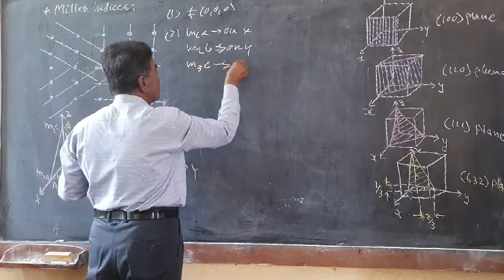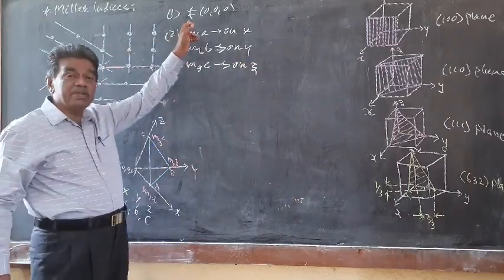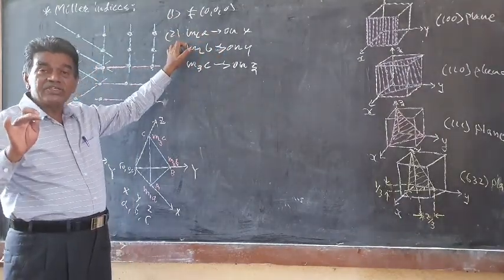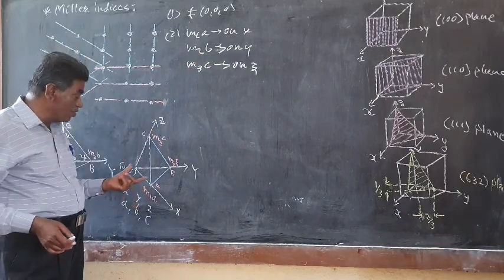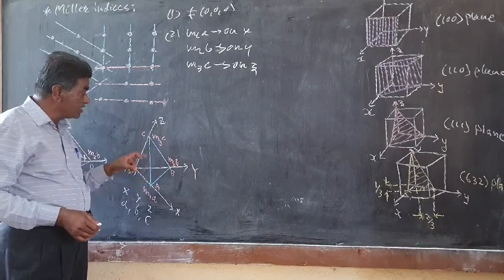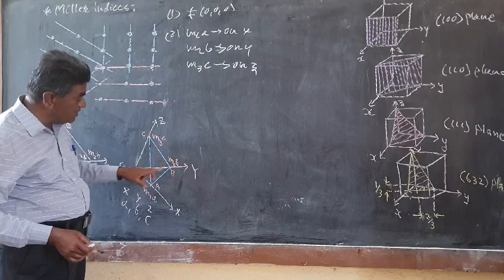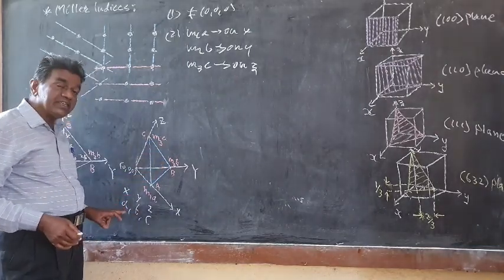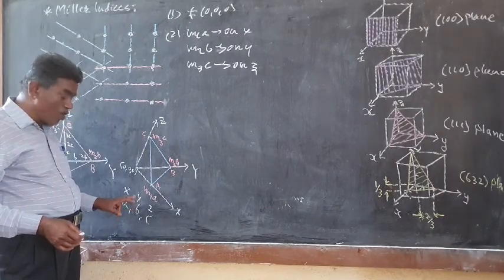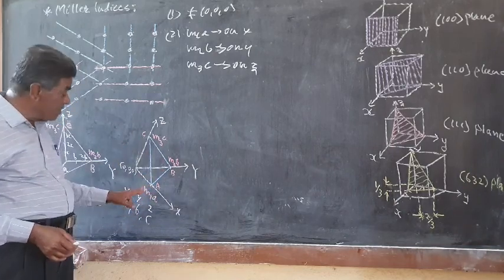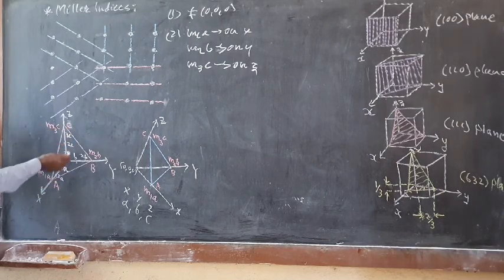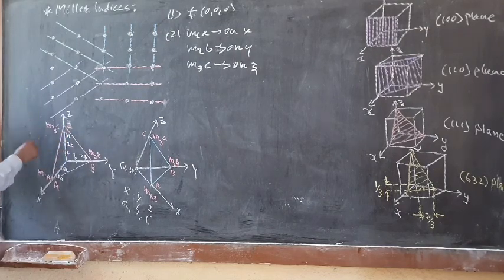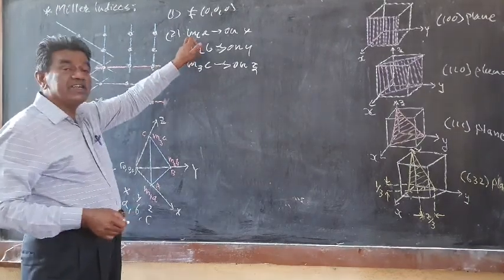So m₃c is the coordinate made by the plane on the z-axis. The intercepts are m₁a on x, m₂b on y, and m₃c on z. Here a, b, c are the primitives of the unit cell. The values m₁, m₂, m₃ are integers — for example, if the intercept is 3a then m₁ equals 3, if it is 4c then m₃ equals 4.